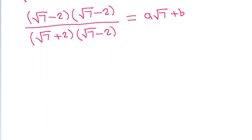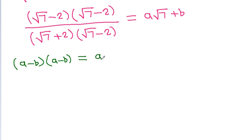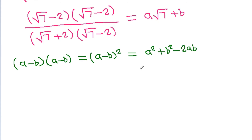And (a - b) times (a - b) is equal to (a - b) squared, which will be equal to a squared plus b squared minus 2ab.